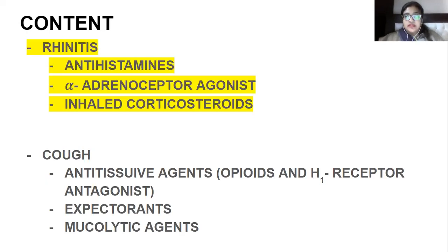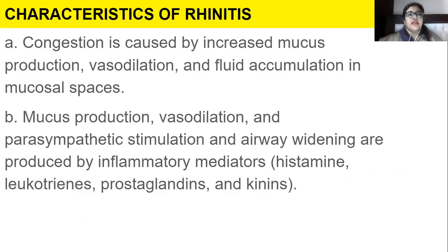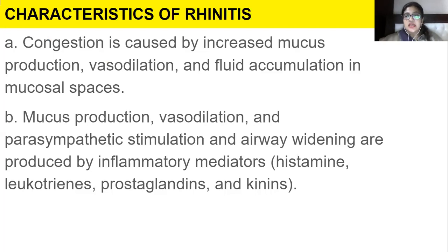The classes of drugs that help treat rhinitis are antihistamines, alpha adrenoreceptor agonists, and inhaled corticosteroids. Congestion in rhinitis is caused by increased mucous production, vasodilation, and fluid accumulation in mucosal spaces. Inflammatory mediators — histamine, leukotrienes, prostaglandins, and kinins — produce mucous production, vasodilation, parasympathetic stimulation, and airway widening.